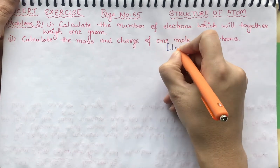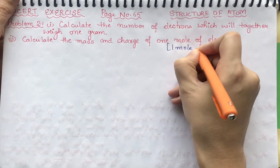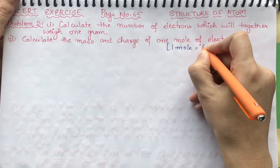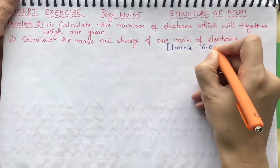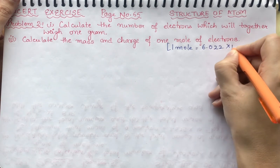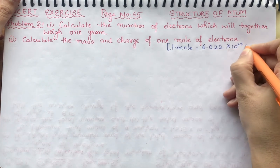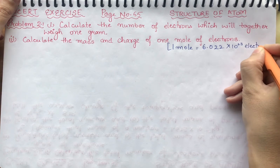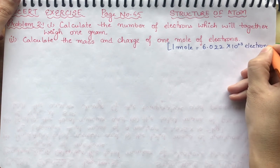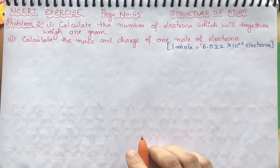1 mole of electrons is equivalent to Avogadro's number, that is 6.022 into 10 raised to the power 23 electrons. So we have 1 mole of electrons.